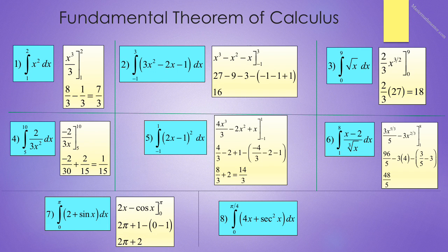Number 7 reads the integral from 0 to pi of 2 plus sine x. Integrating each piece we get 2x minus cosine x evaluated from 0 to pi, and that becomes 2 pi plus 1 minus the quantity 0 minus 1. Final answer: 2 pi plus 2.